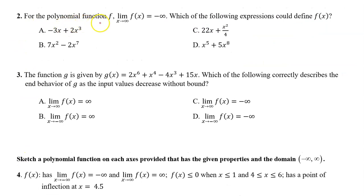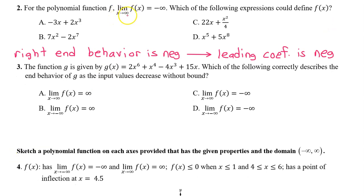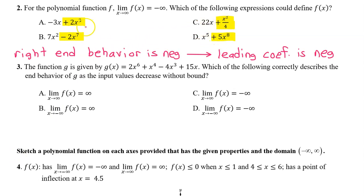Number two: for the polynomial function f, all we know is that the limit as x approaches positive infinity of f(x) is negative infinity. Which of the following expressions could define f(x)? When we talk about the limit as x approaches positive infinity, we're talking about the right end behavior. If the right end behavior is negative, that indicates that the leading coefficient is negative. The leading coefficient is the coefficient of the highest degree term. Here are the highest degree terms in each expression — the leading terms. Only one of these has a negative leading coefficient. So the answer is B.